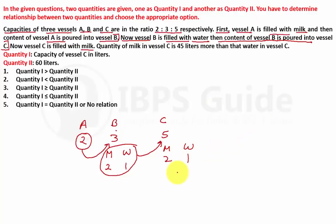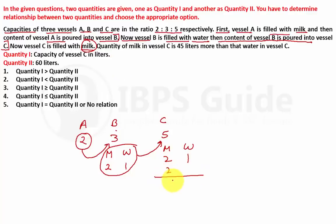After pouring from B into C, 3 parts are accounted for. The remaining 2 units of vessel C's capacity (total 5 units) are filled with milk. So the complete ratio of milk to water in vessel C is (2+2):1 = 4:1.